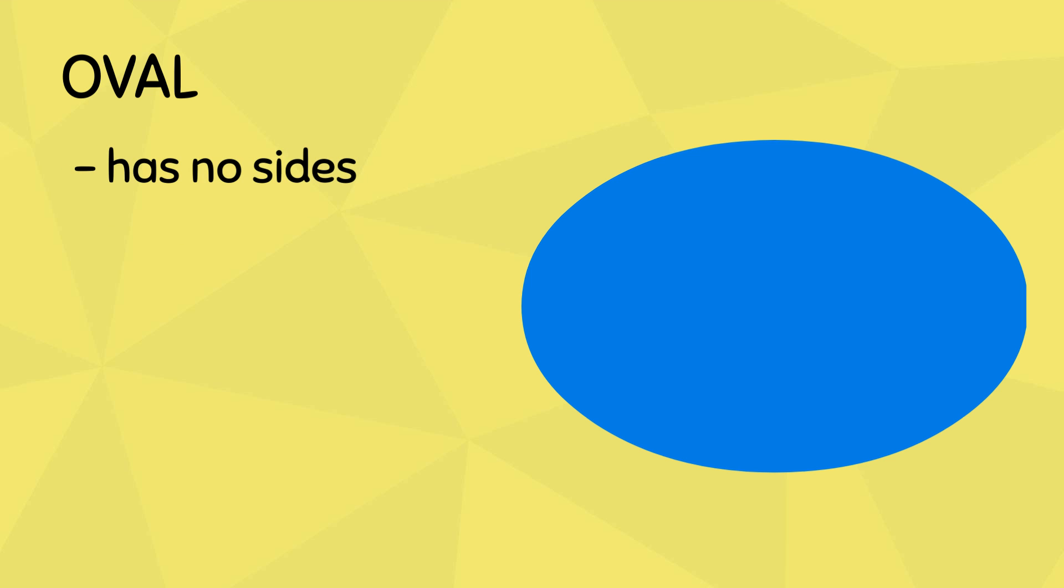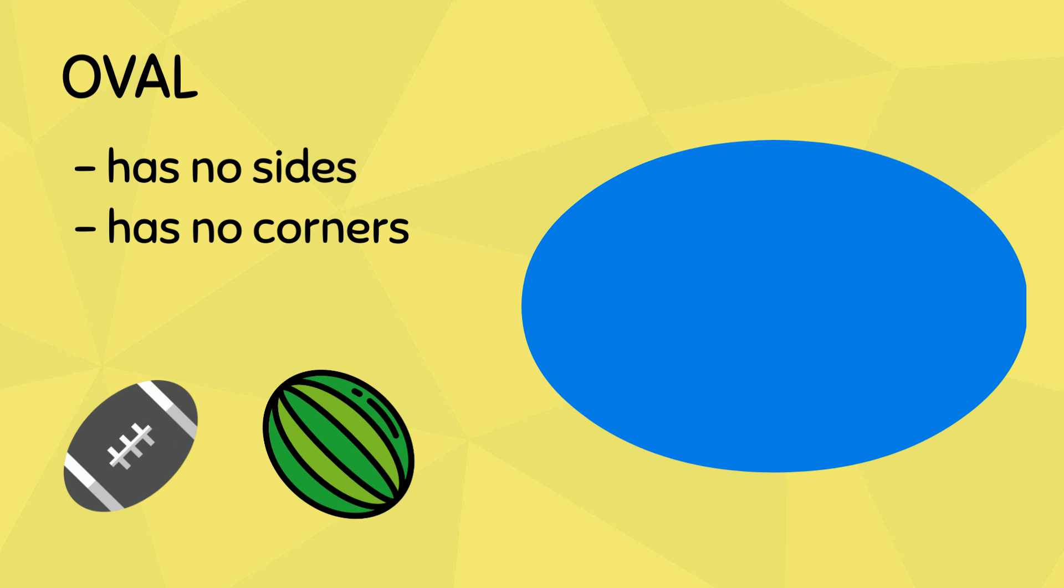no sides and no corners. This football and this watermelon take the shape of an oval. This next shape is